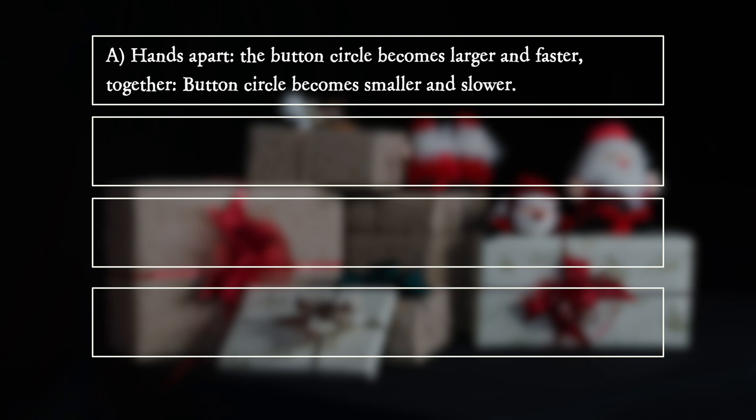A. Hands apart: the button circle becomes larger and faster. Together: button circle becomes smaller and slower.